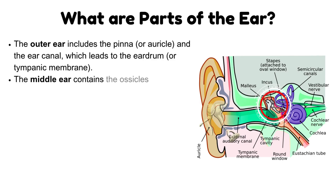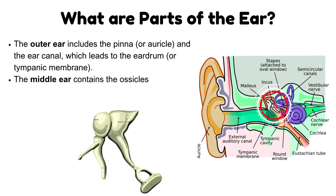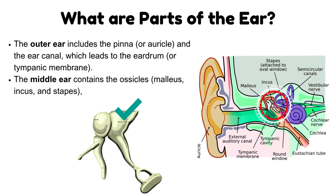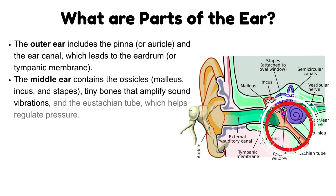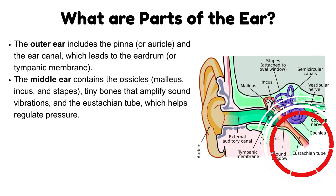The middle ear contains the ossicles — malleus, incus, and stapes. These are tiny bones that amplify sound vibrations, and the eustachian tube, which helps regulate pressure.